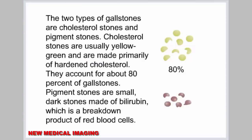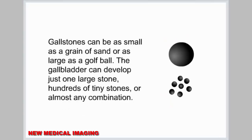The two types of gallstones are cholesterol stones and pigment stones. Cholesterol stones are usually yellow-green and are made primarily of hardened cholesterol; they account for about 80% of gallstones. Pigment stones are small, dark stones made of bilirubin, which is a breakdown product of red blood cells. Gallstones can be as small as a grain of sand or as large as a golf ball. The gallbladder can develop just one large stone, hundreds of tiny stones, or almost any combination.